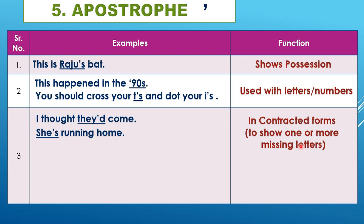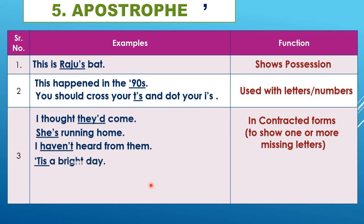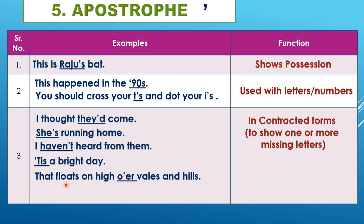More examples of contractions: 'I haven't heard from them' — the O is missing from 'have not.' 'Tis a bright day' means 'It is a bright day' — the I is missing. In the poem Daffodils, 'o'er' means 'over' — the V is missing. The missing letters are replaced by the apostrophe.